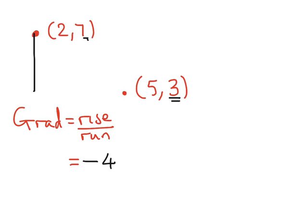So we're going down four places. The run is going to be 3, because we go from a distance of 2 to a distance of 5.